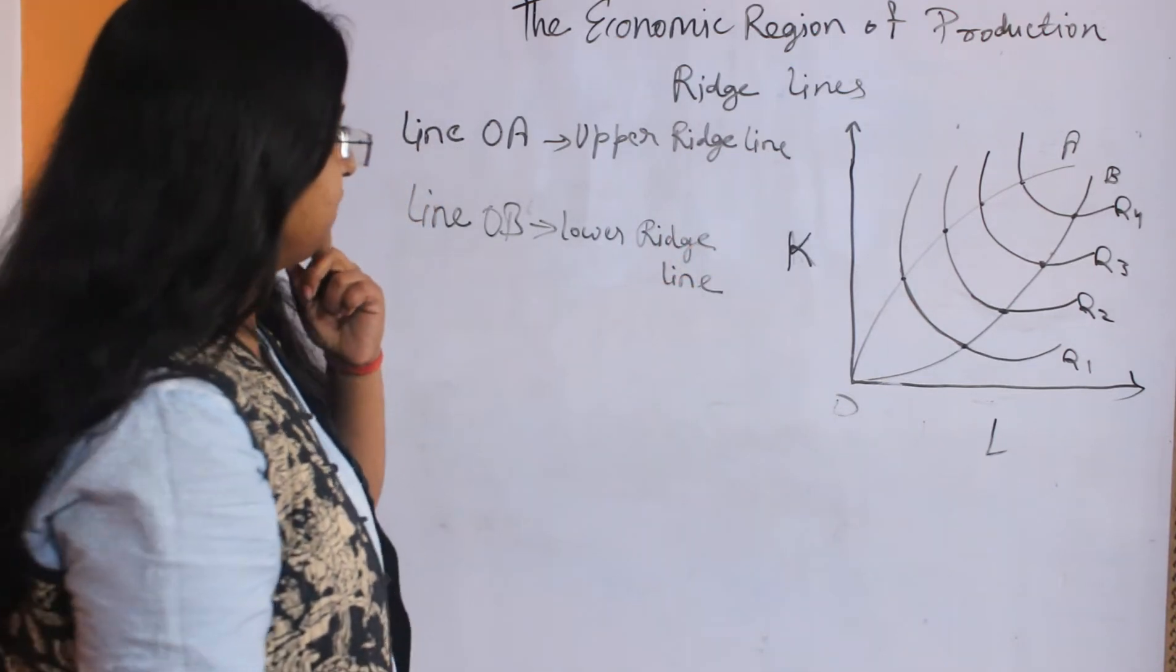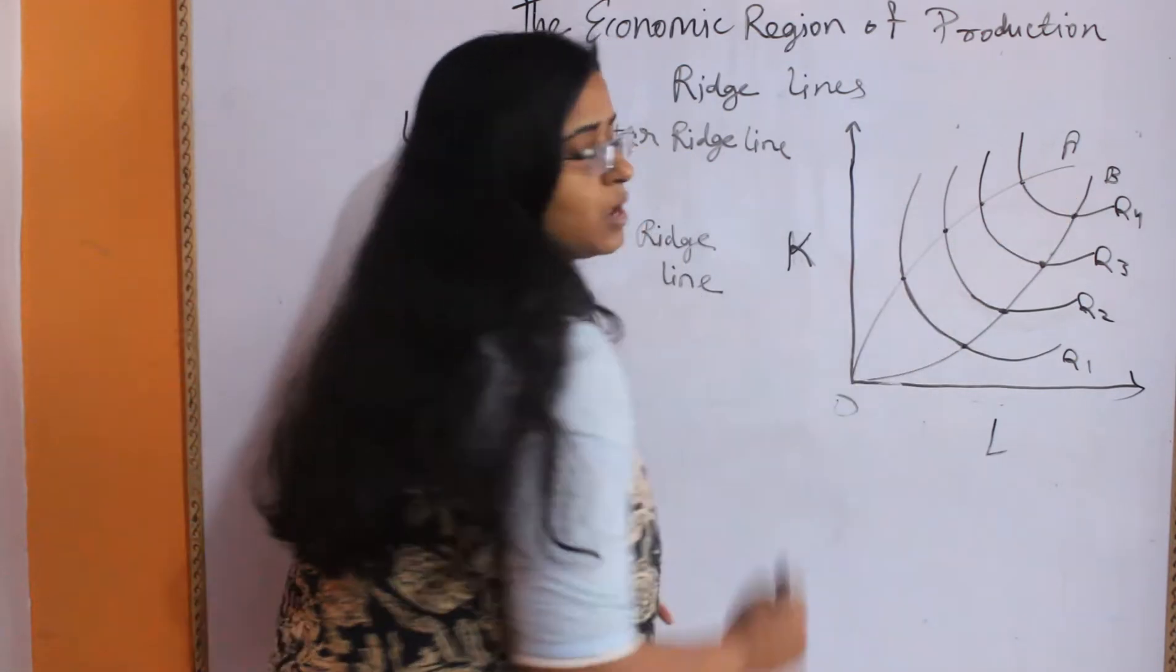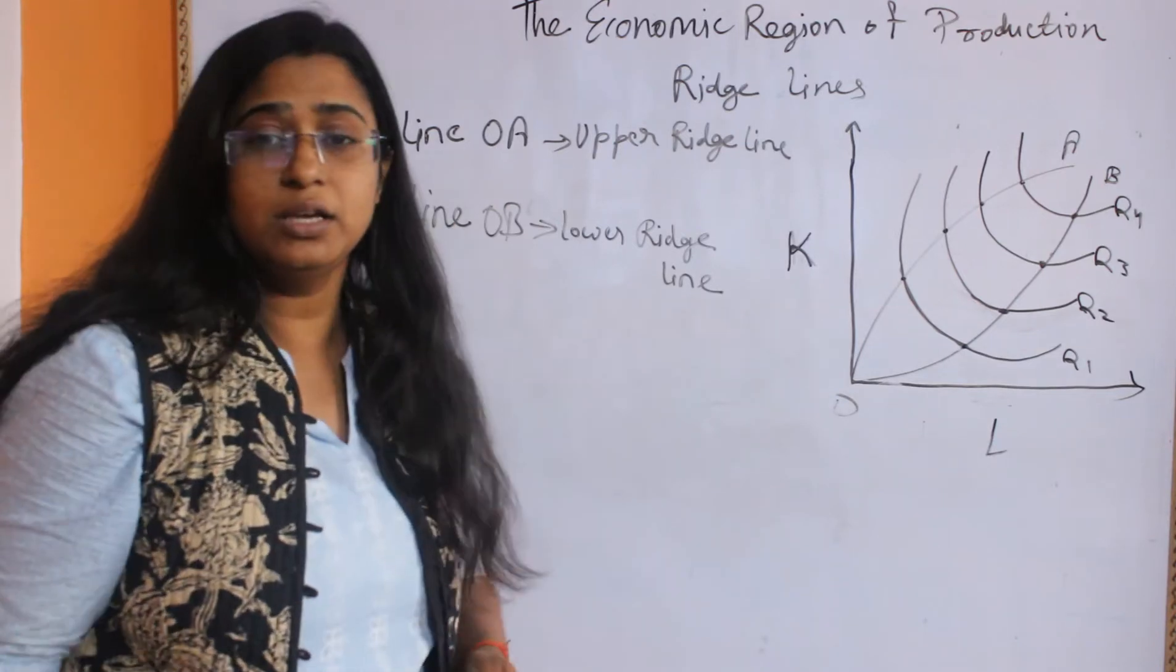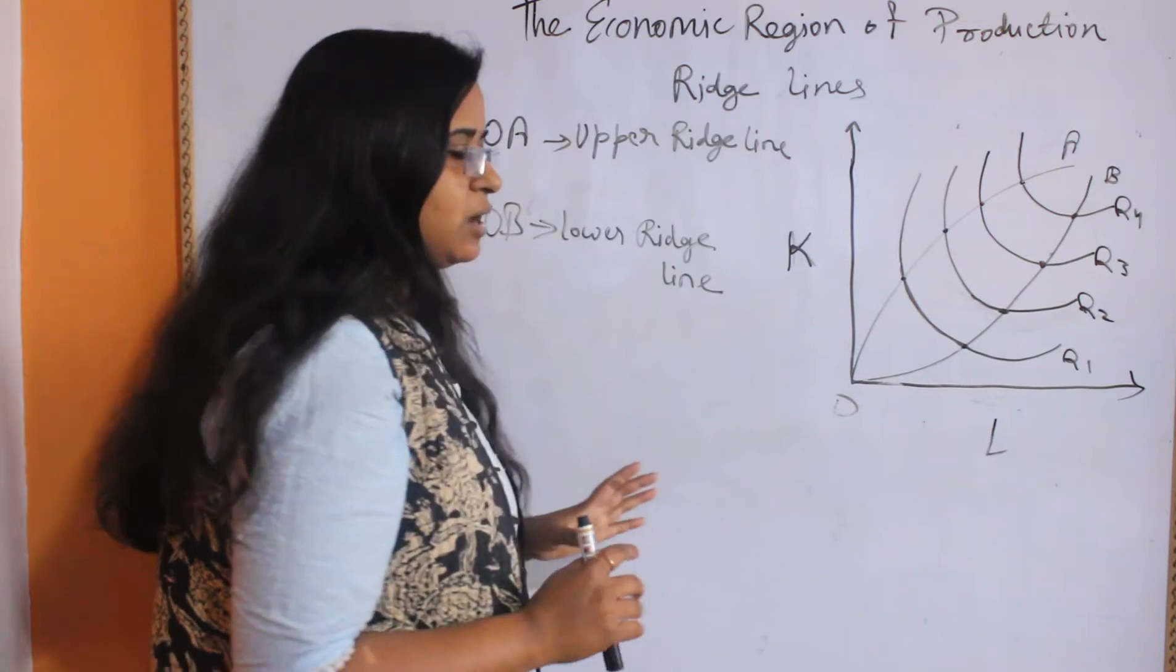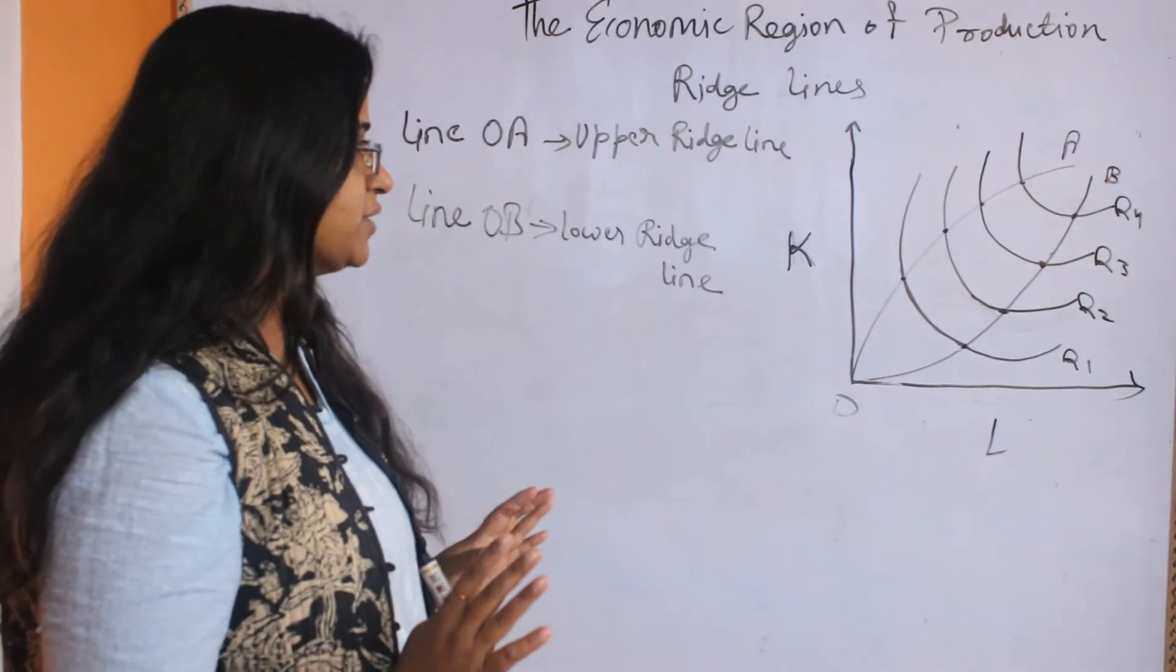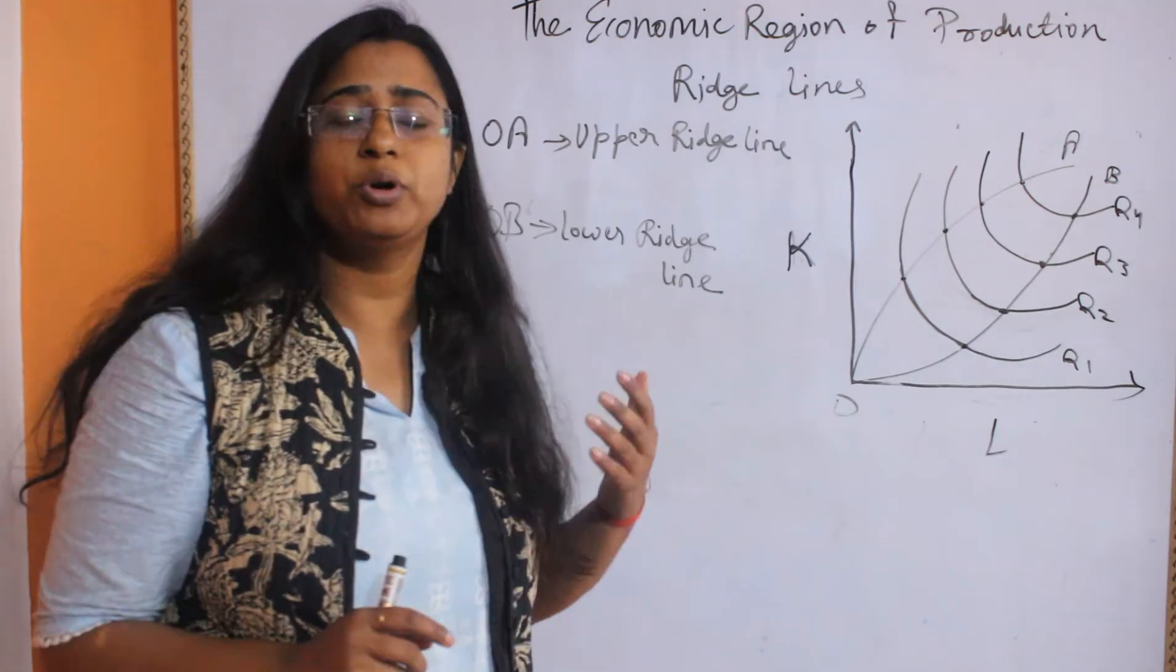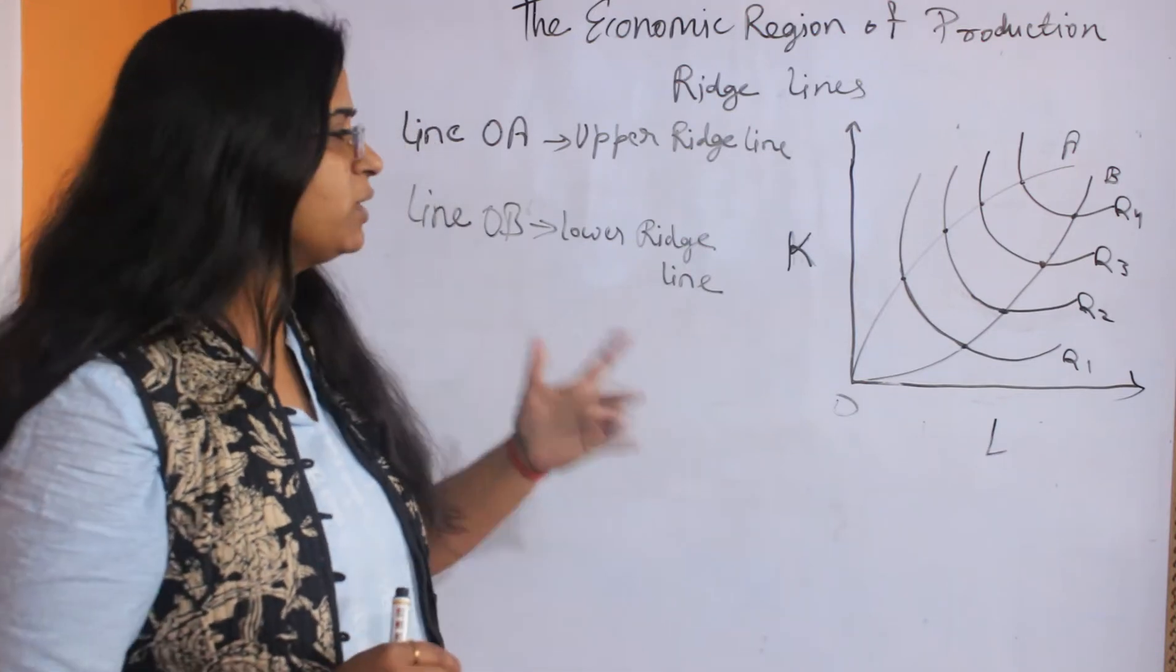You can see the line OA. This one is the upper ridge line and the line OB is the lower ridge line. These two lines show a particular range of the isoquants on which the production technique is efficient. What does that mean?